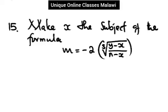Let's see the solution of this question. I would make x the subject of the formula. The equation is m is equal to negative 2y minus x, that is n minus x.